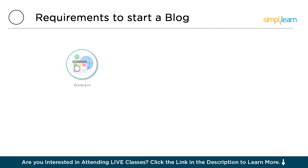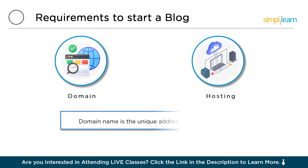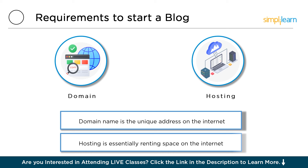First, let's have a look at the requirements to start a blog: domain and hosting. The first step to creating a blog is selecting a domain name and securing hosting. Your domain name is your unique address on the internet, like yourblogname.com, and hosting is essentially renting space on the internet to store your blog. Choose a domain name that's easy to remember and reflects your blog's content or niche. For hosting, there are numerous affordable and reliable options such as Bluehost, SiteGround, and Hostgator, catering to various needs and budgets.